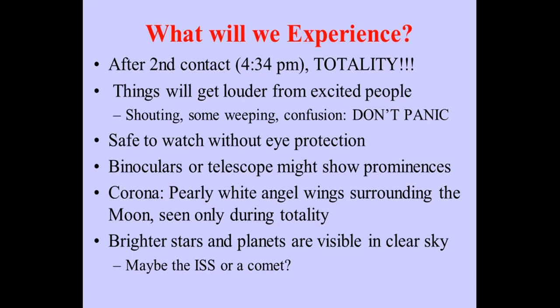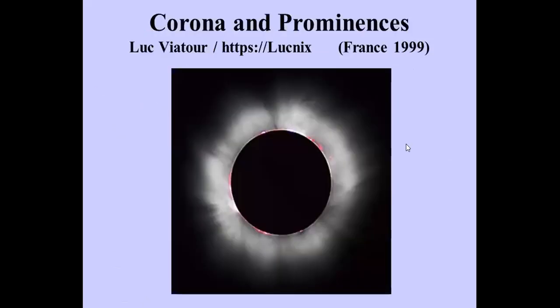Has anyone seen a total eclipse? During totality, it is completely safe to watch without eye protection — and you shouldn't wear glasses because you'll miss the corona, the sun's outer atmosphere, visible only during totality. It's a pearly white, and its shape varies depending on solar activity — just awesome to see. With binoculars or a telescope you can also see prominences — hot plasma following the sun's magnetic field lines, glowing red — as hydrogen gas emitting red light. But don't spend too long on that either.